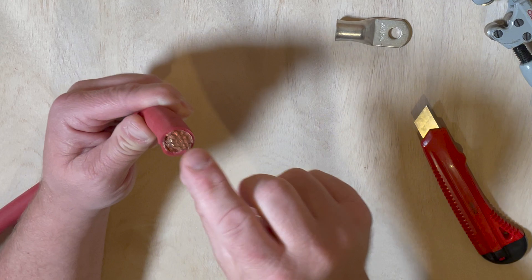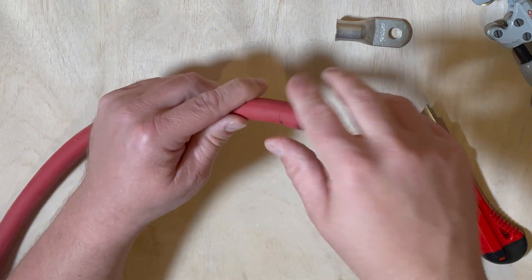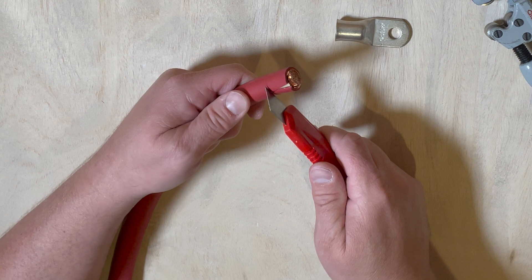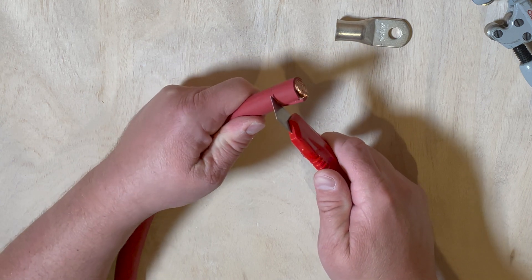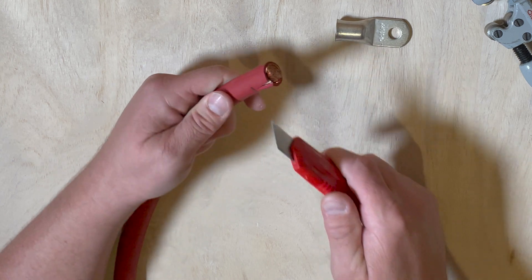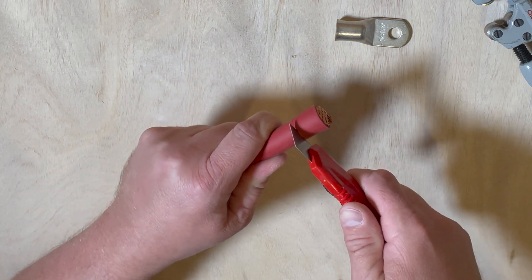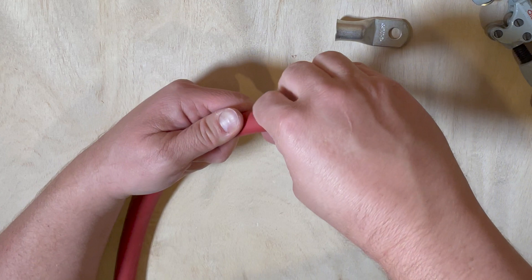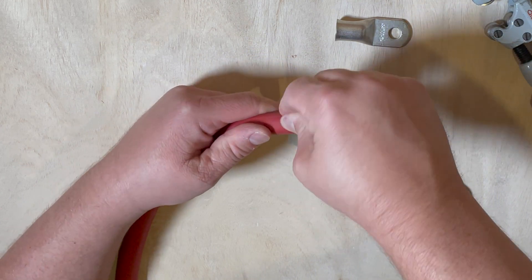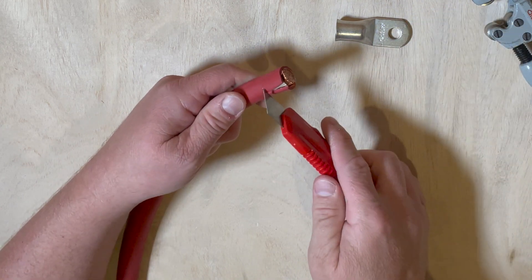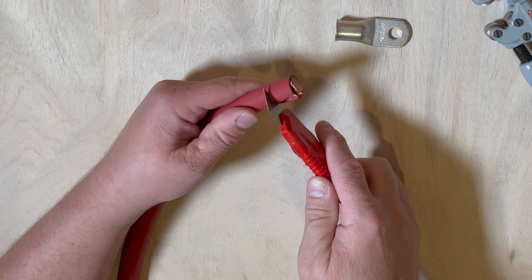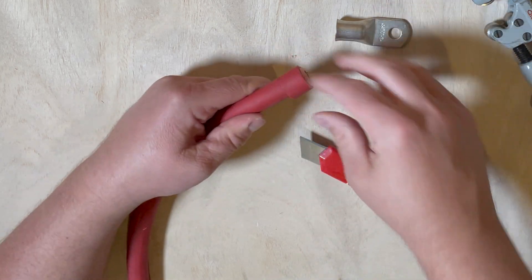As you can see, this is pretty fine copper in here. I'm just going to gently, without cutting myself, follow my mark that I made with my pipe cutter. And then just slowly pull and tear.